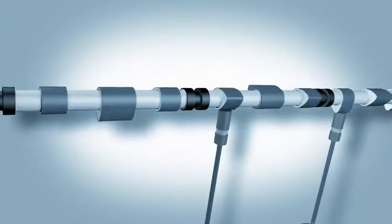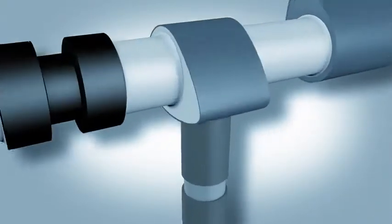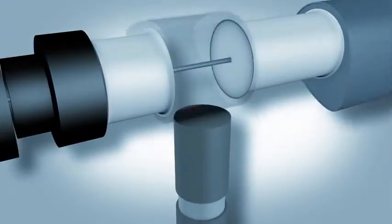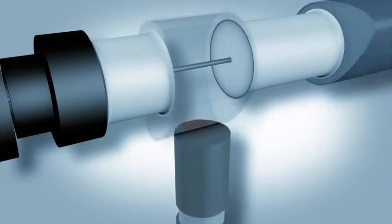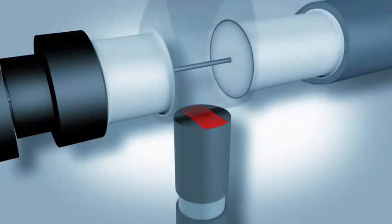As we zoom in, notice the red line that moves from back to front as the cam lobe sweeps over the lifter. This line represents heat that is caused by the friction due to the very high pressure between the cam and lifter wear surfaces.